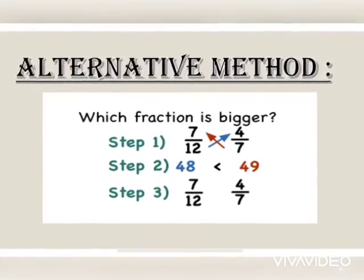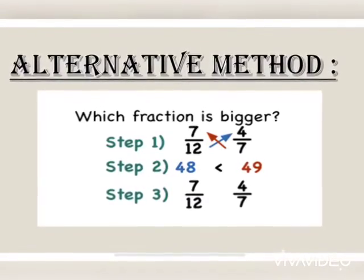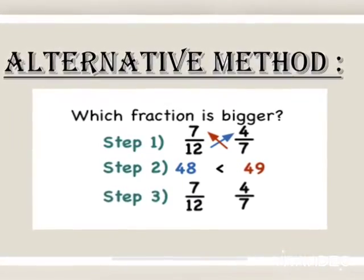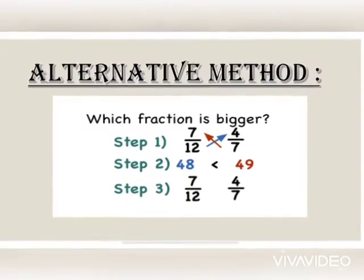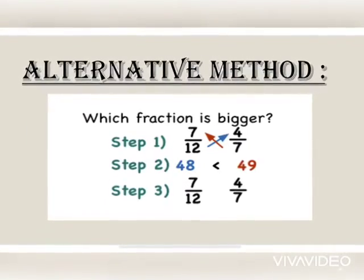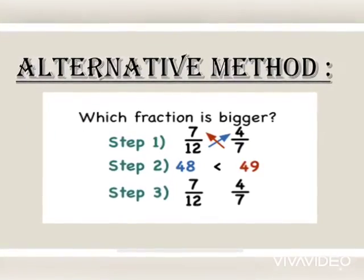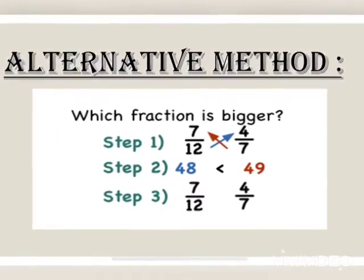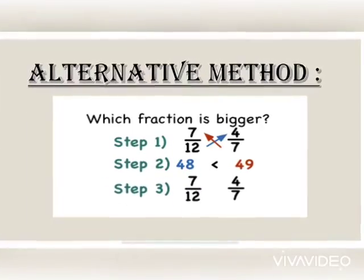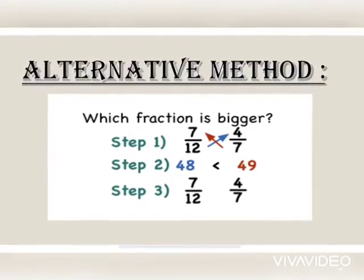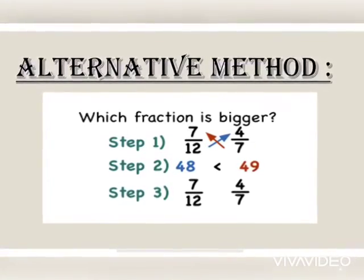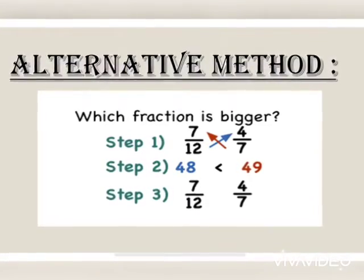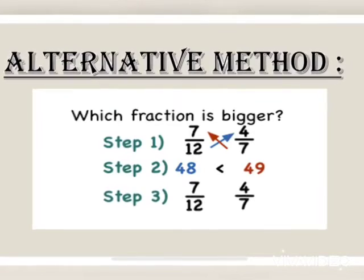We can also obtain an alternative method, that is cross multiplication method. First of all, do the cross multiplication as it is given in the example. Here I am taking the example of 7 by 12 and 4 by 7. And we will get product as 48 and 49. And now we can compare 48 and 49 very easily. That is 7 by 12 will be less than 4 by 7.